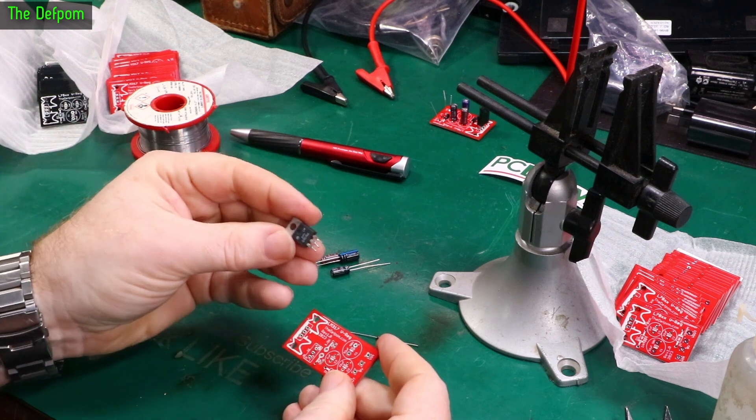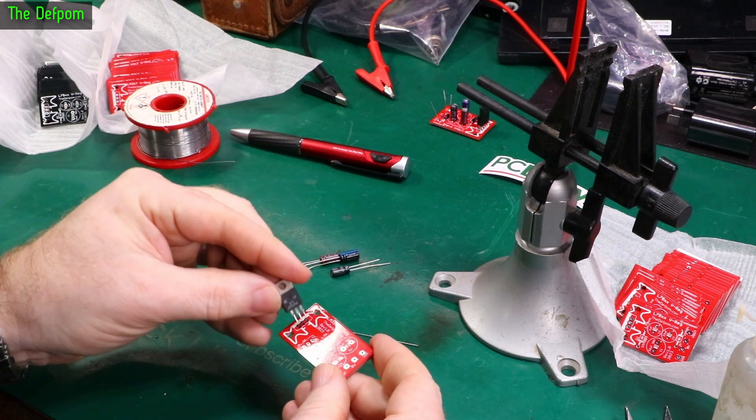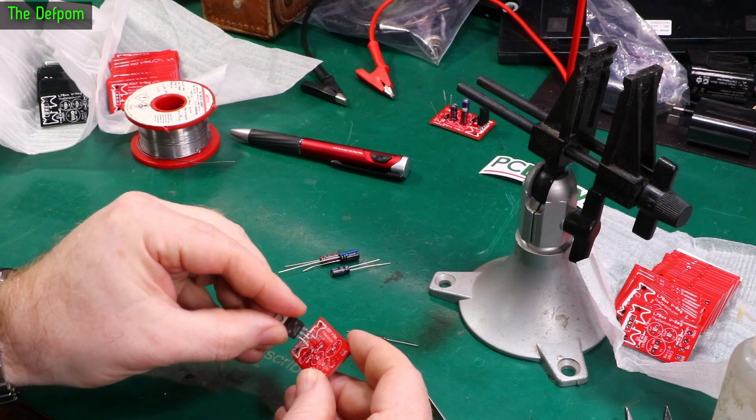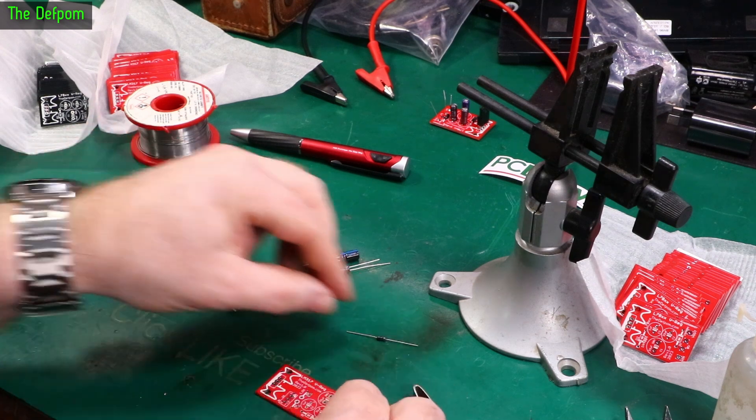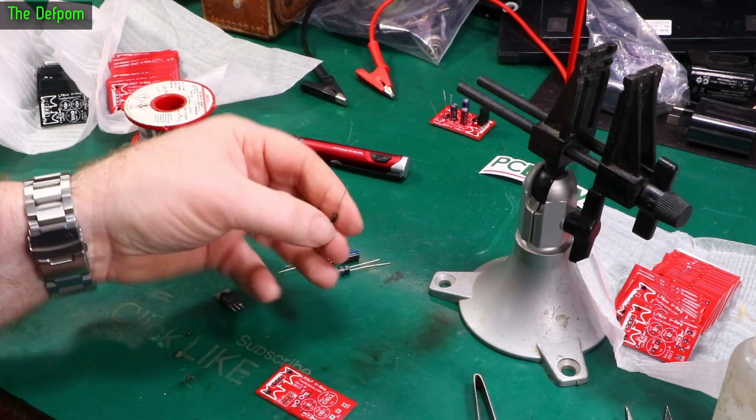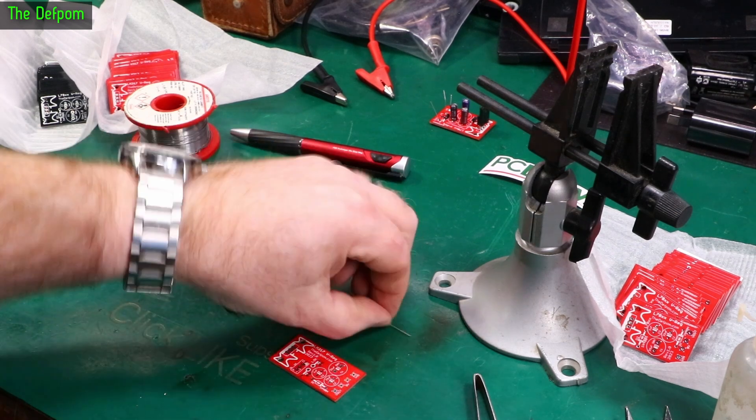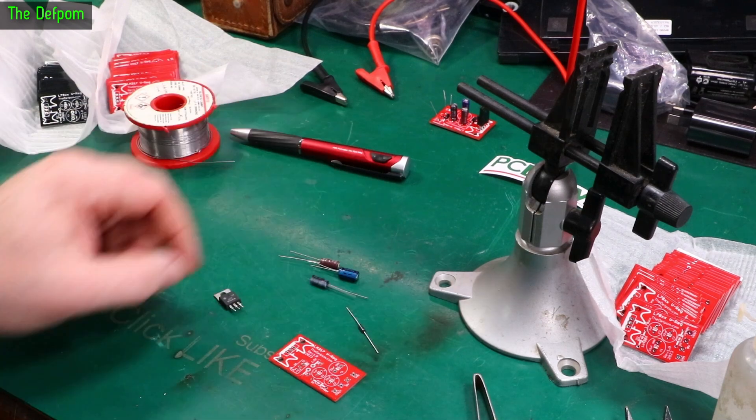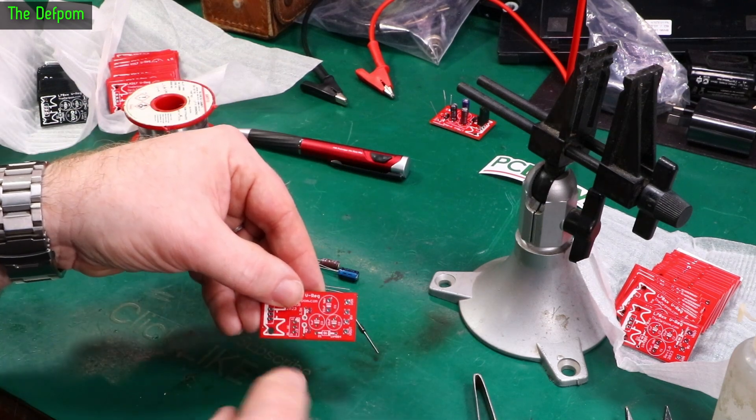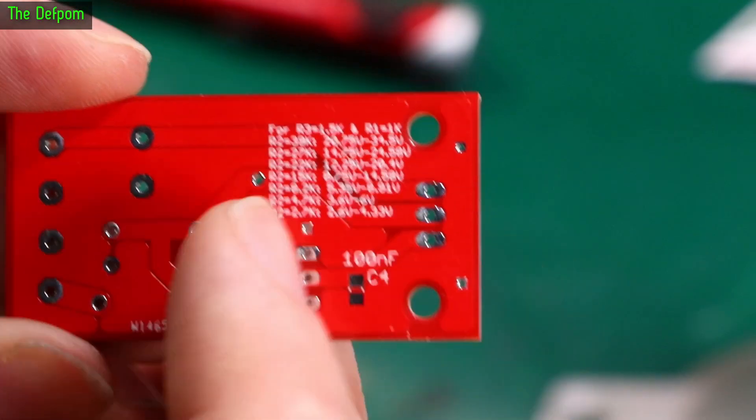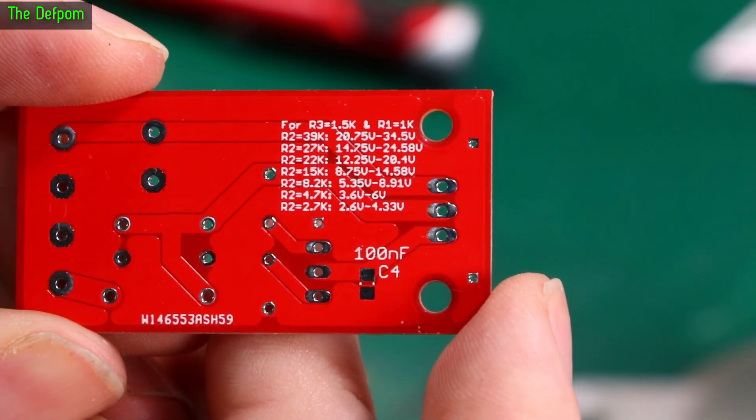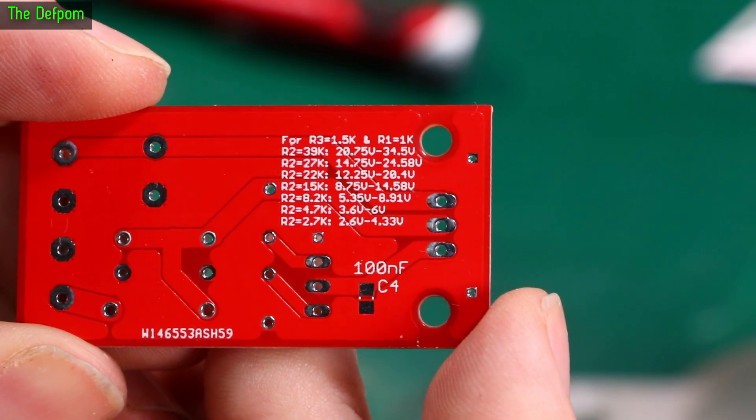All right so now let's build up the LM317 version. I've got a used one here. I've pulled this from something. Obviously it's working otherwise I wouldn't catch it but we'll drop that in now. Clean these legs up and put it in. Got a diode here. Again this is just a silicon diode. The Schottky diodes I've got are quite large. I need to get some smaller ones. I'll just be using another silicon for the time being and the same capacitors as before. I need to sort out these resistor values and trimmer and stuff.